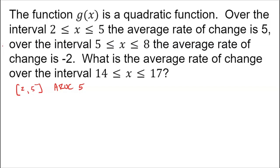The next interval is 5 to 8, and over that interval the average rate of change was negative 2. A couple of things to notice: those are consecutive equal-length intervals. The first interval ended at 5, the second interval started at 5, and they're both 3 units wide. For that interval, the average rate of change was negative 2 per unit, meaning a total change of negative 6.